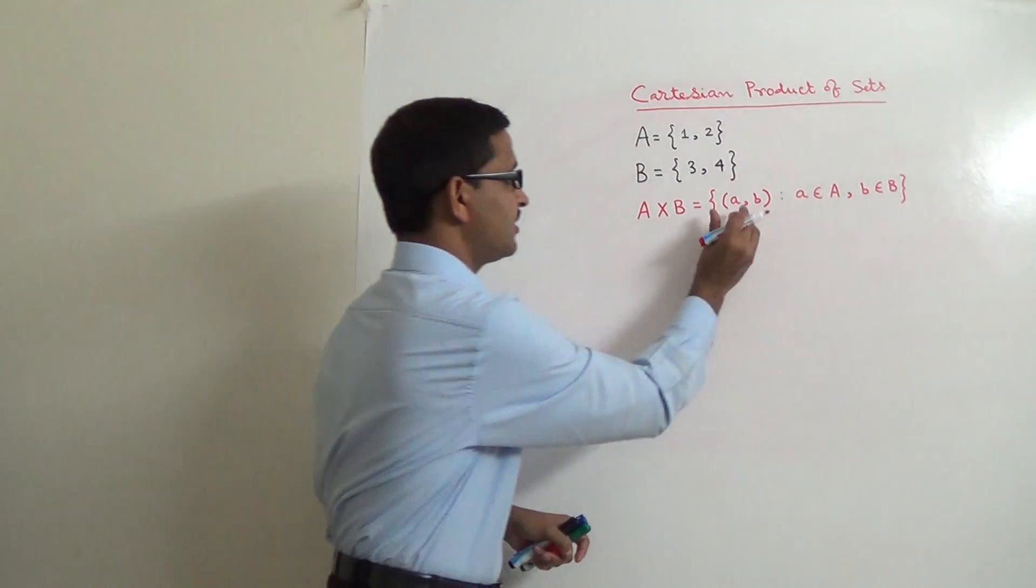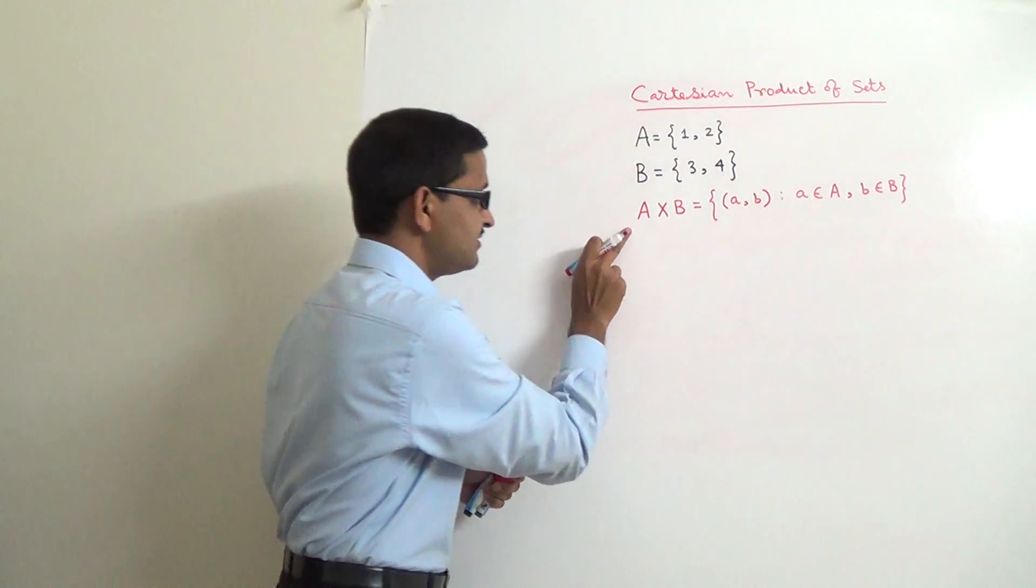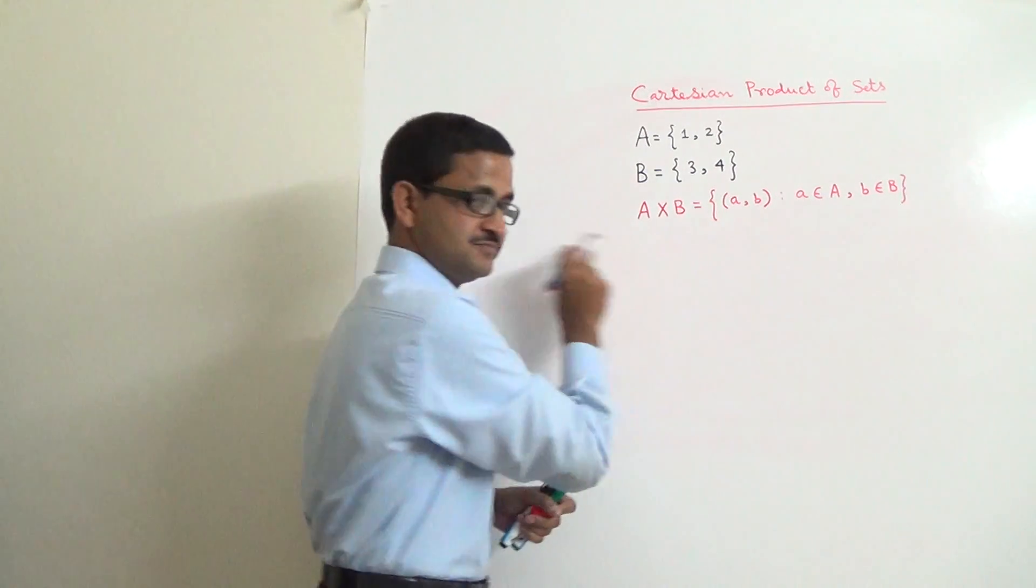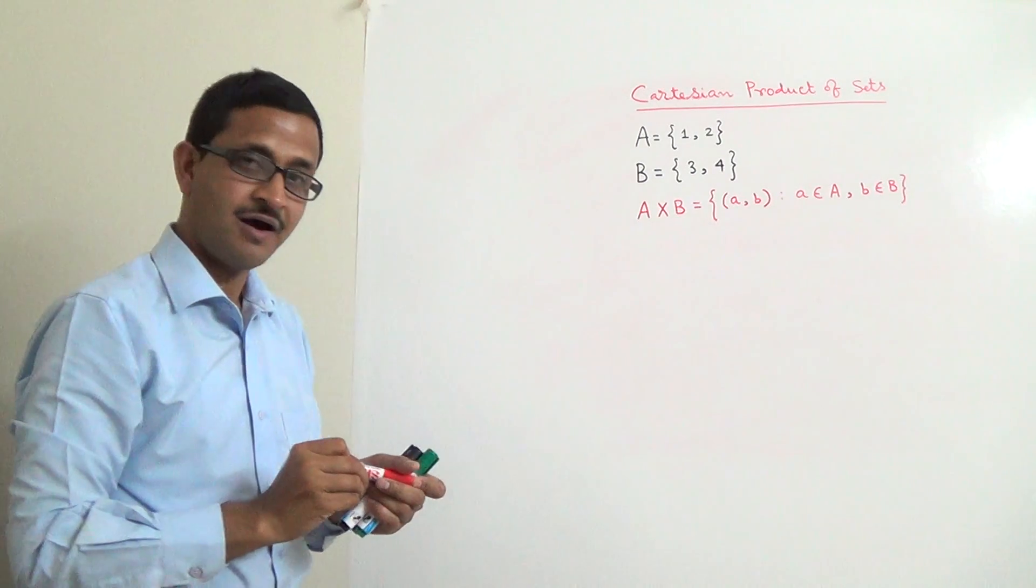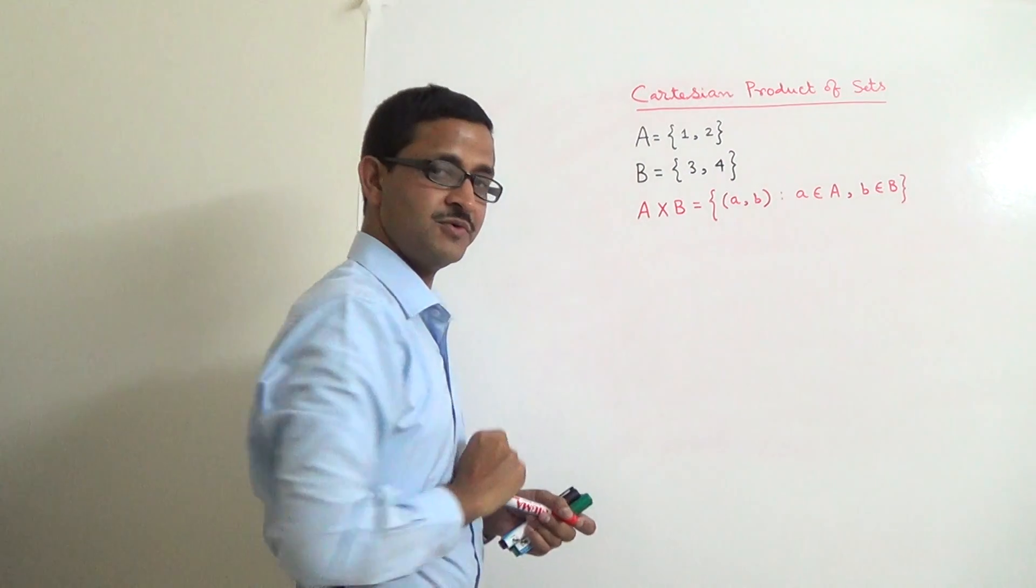And b belongs to the second set B which is here in the right of the cross symbol. All such ordered pairs should be the element of A cross B. That is the theoretical definition.